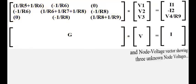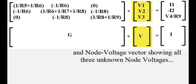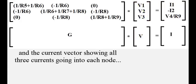And the node voltage vector showing all 3 unknown node voltages. And the current vector showing all 3 currents going into each node.